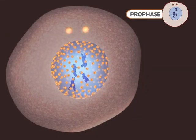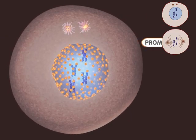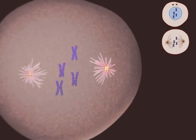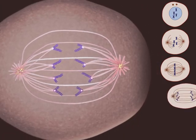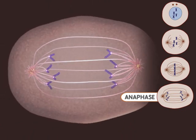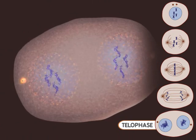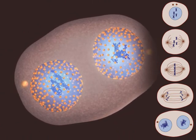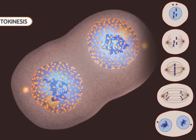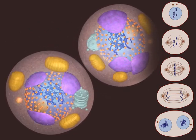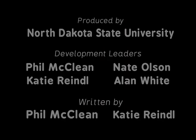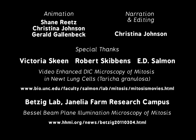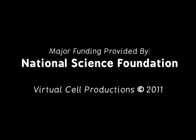Let's watch the process one more time. Mitosis begins with prophase — notice the DNA condensing into chromosomes during this stage. Microtubules appear during prometaphase, and the nuclear membrane breaks down. Metaphase occurs when the chromosomes are aligned at the center of the cell. During anaphase, the chromosomes are moving apart. The telophase stage is marked by the appearance of new nuclear membranes. This is the end of mitosis. Finally, the splitting of the cell occurs during cytokinesis. The two new cells are now ready to grow and perform their specialized functions.